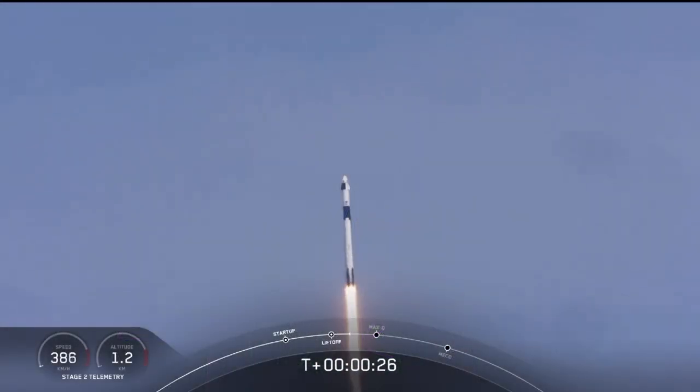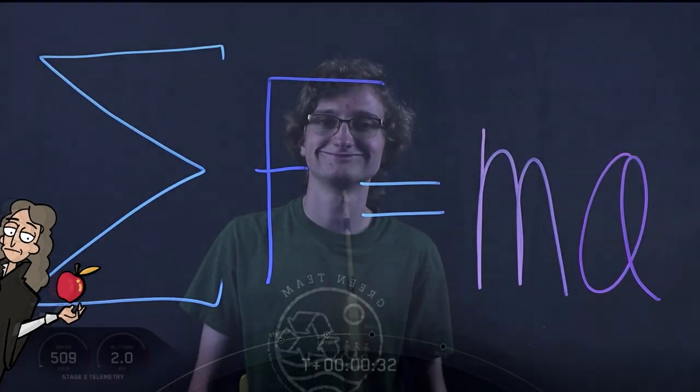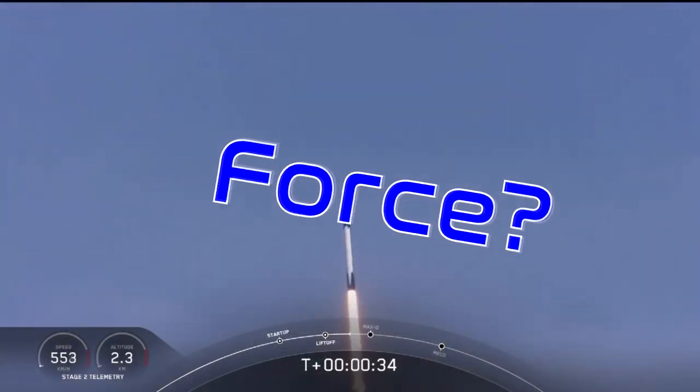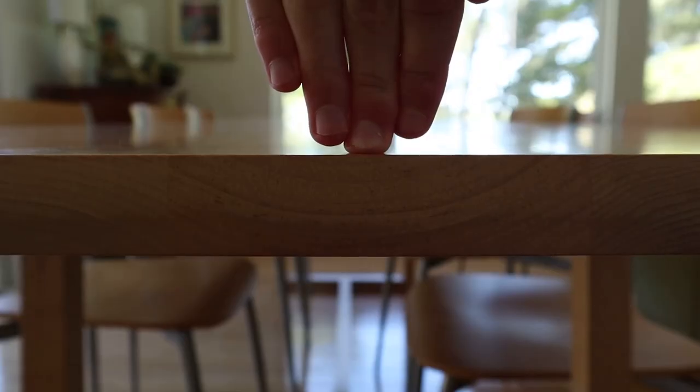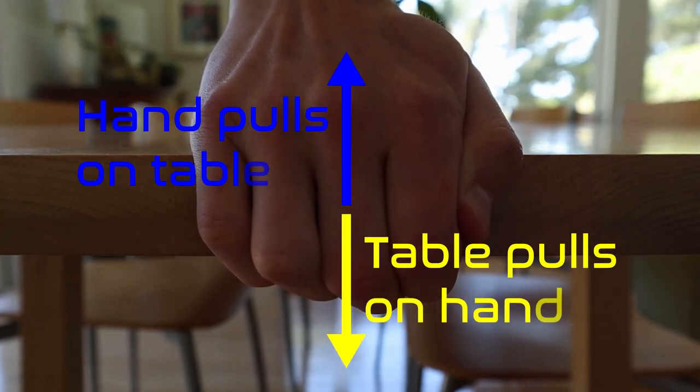How does our rocket accelerate upwards? By Newton's second law, the sum of all forces is mass times acceleration. A force is simply an interaction, a push or pull between bodies. And by Newton's third law, every force will have an equal but opposite reaction force.